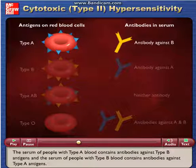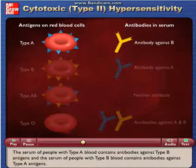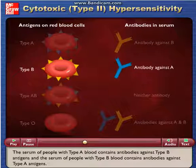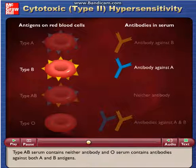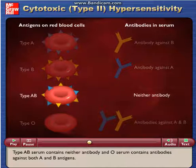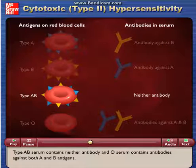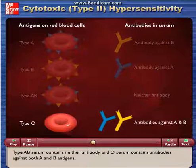The serum of people with type A blood contains antibodies against type B antigens, and the serum of people with type B blood contains antibodies against type A antigens. Type AB serum contains neither antibody, and O serum contains antibodies against both A and B antigens.